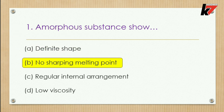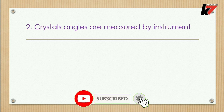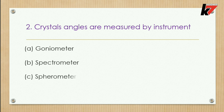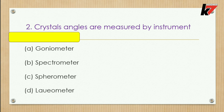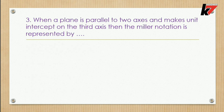Question 2: Crystal angles are measured by which instrument? Options: goniometer, spectrometer, spherometer, or leometer. The correct option is the first one — goniometer. A goniometer is used to measure crystal angles.